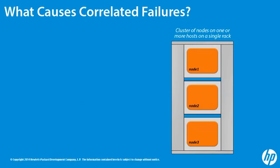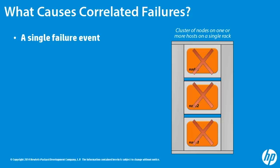Correlated failures occur when two or more nodes fail as a result of a single failure event. Failure events are often caused by conflicts over shared resources such as power, networking, virtual machine hosts, or shared storage.